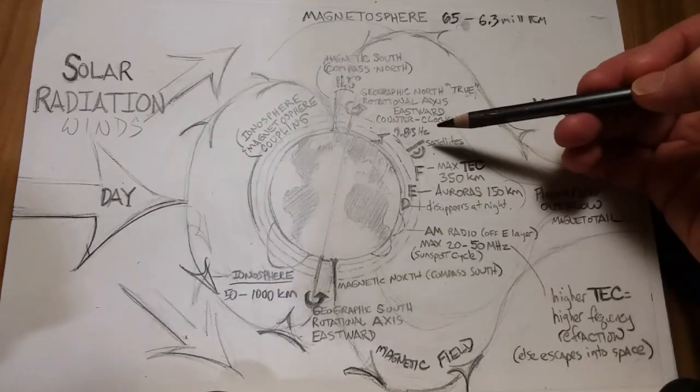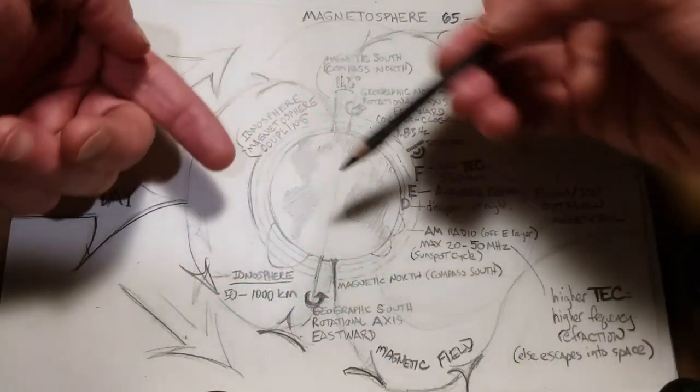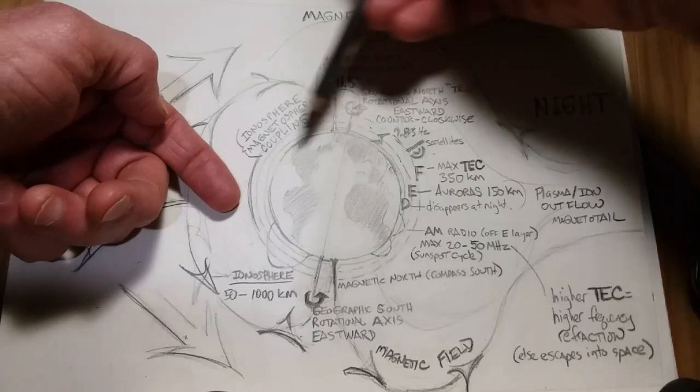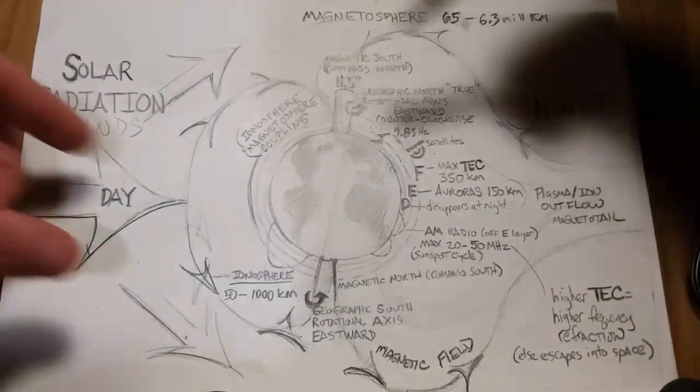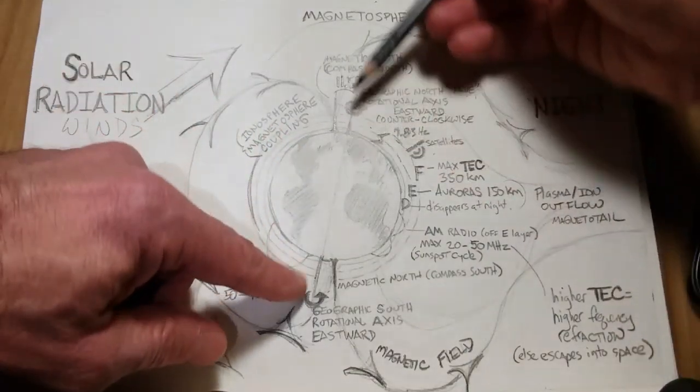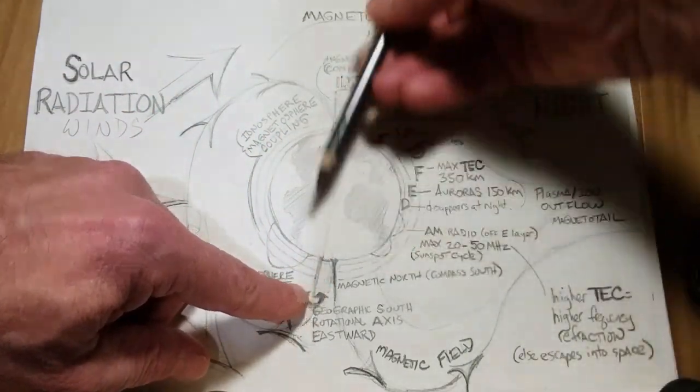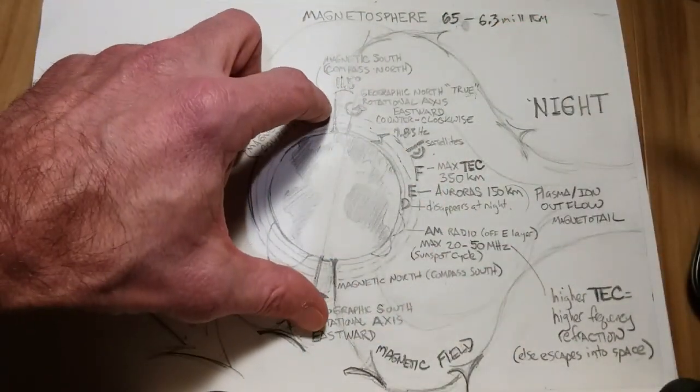So the geographic north and south is actually the rotational axis of the Earth, and the Earth rotates in a counterclockwise or eastward direction, and we also go around the sun in a counterclockwise direction as well. So this is the pole around which the Earth rotates, and these are the magnetic poles.